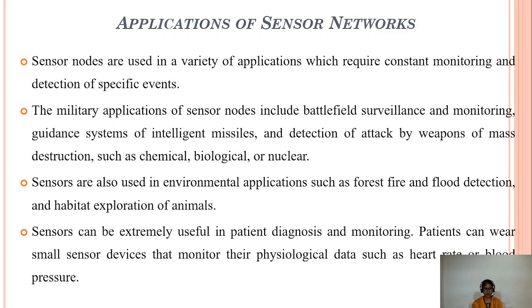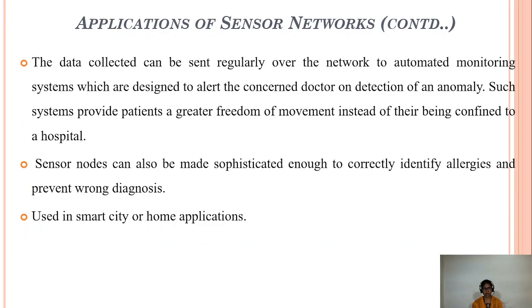Sensor networks are also used in environmental applications such as forest fire detection, flood detection, and exploration of animals. In health applications, sensor networks are extremely useful to diagnose patients and monitor patient conditions. Patients can carry small sensor devices which monitor physiological data such as heart rate or blood pressure, and data is collected and sent throughout the network to give alerts to the concerned doctor for detection of anomalies. Such systems provide patients great freedom of movement instead of being confined to the hospital. Sensor nodes are also sophisticated enough to correctly identify allergies or prevent wrong diagnoses. Sensor networks are also used in smart cities and home appliances.